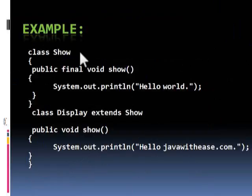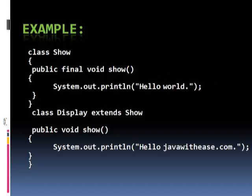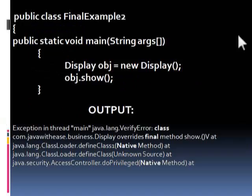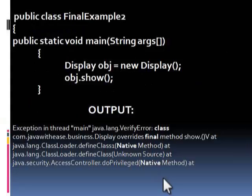Example: first, create a class show. That is an error because a final method cannot be overridden. Create an object of the display class, then the method is called. Output: java.security.accessController.doPrivilege native method.